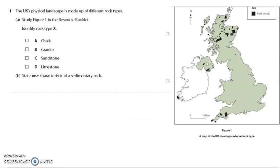So let's look at some of the simple questions first of all. So this is what you're going to find at the lower end of the scale. So the UK's physical landscape is made up of different rock types. Study figure one in the resource booklet. So you'll have to turn to the resource booklet and identify rock type X. So you can see that we're looking at this rock type that we would find in Scotland and in the north. So what kind of rock do we think that is? We have a choice. You mark the X in it. So have a go at that now.